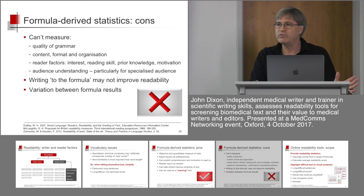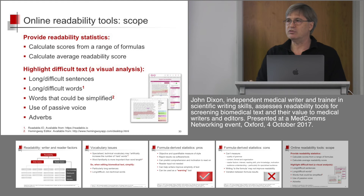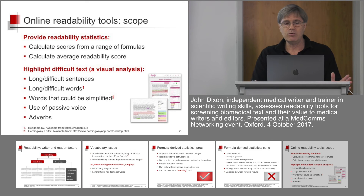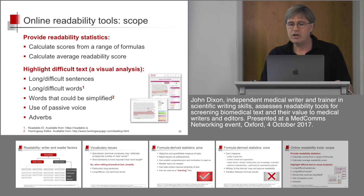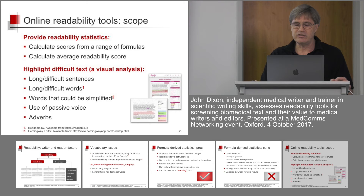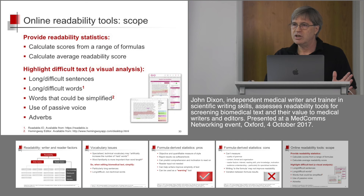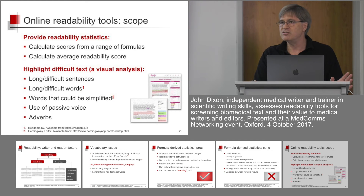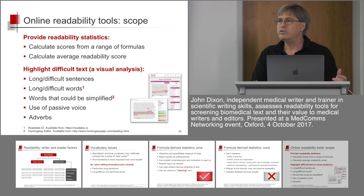There are a lot of formulas and they all vary in the measures they produce. Online readability tools use these formulas and many others, probably calculating scores from a number of formulas and giving an average readability score. But where online tools come into greatest use is providing a highly visual analysis of text — they highlight long and difficult sentences, long and difficult words, words that can be simplified, use of the passive voice, and adverbs. Use of the passive voice and adverbs are two things usually attributed to slightly more difficult text to read.